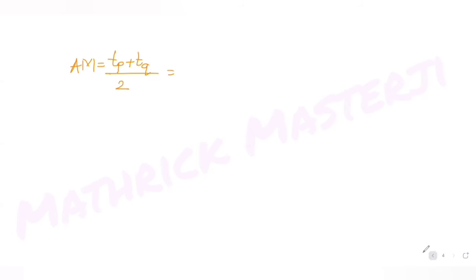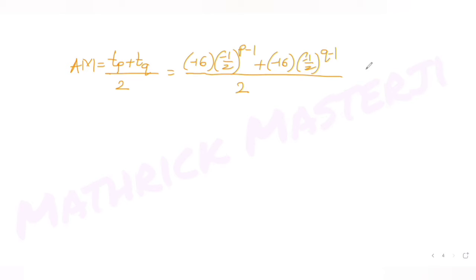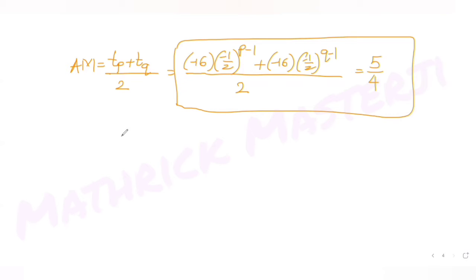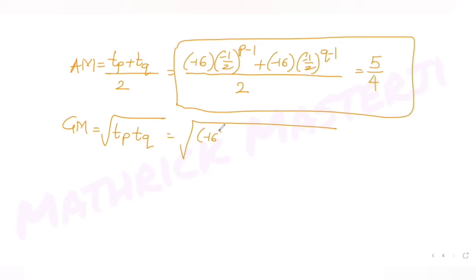The arithmetic mean equals [-16·(-1/2)^(p-1) + (-16)·(-1/2)^(q-1)] / 2 = 5/4. The geometric mean is the square root of (pth term × qth term), which equals √[(-16·(-1/2)^(p-1)) × (-16·(-1/2)^(q-1))] = 1.